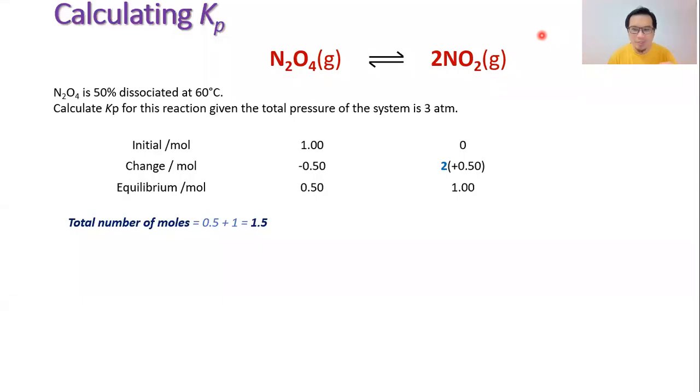Hi everyone, welcome to another chemistry video. Today we're going to be looking at how to actually calculate the equilibrium constant Kp. Of course, p represents partial pressure, so we are calculating the equilibrium constant where the partial pressure information is available or obtainable from the question.